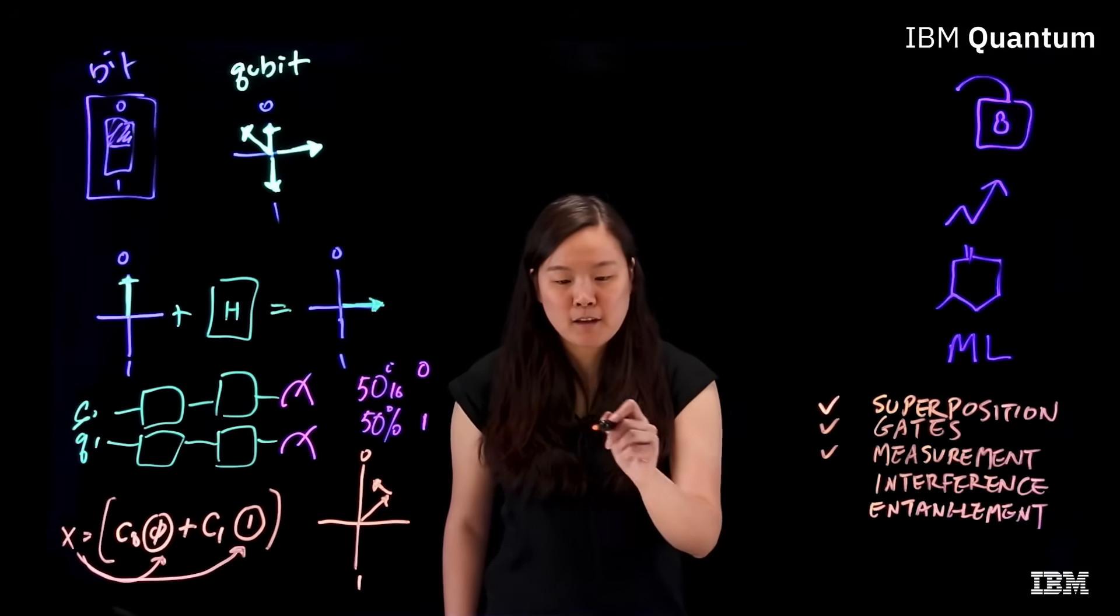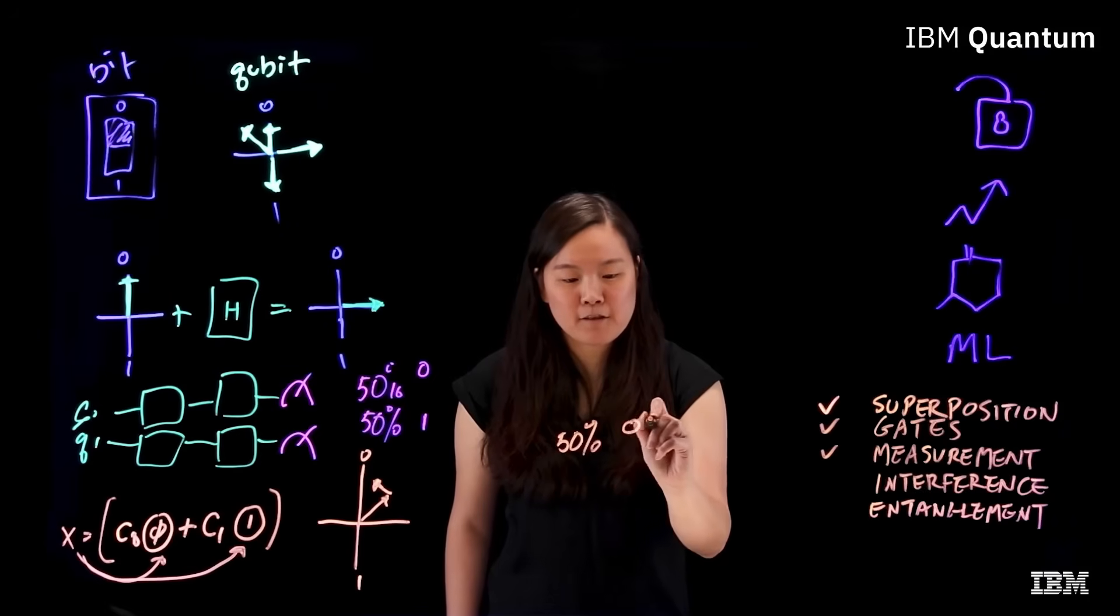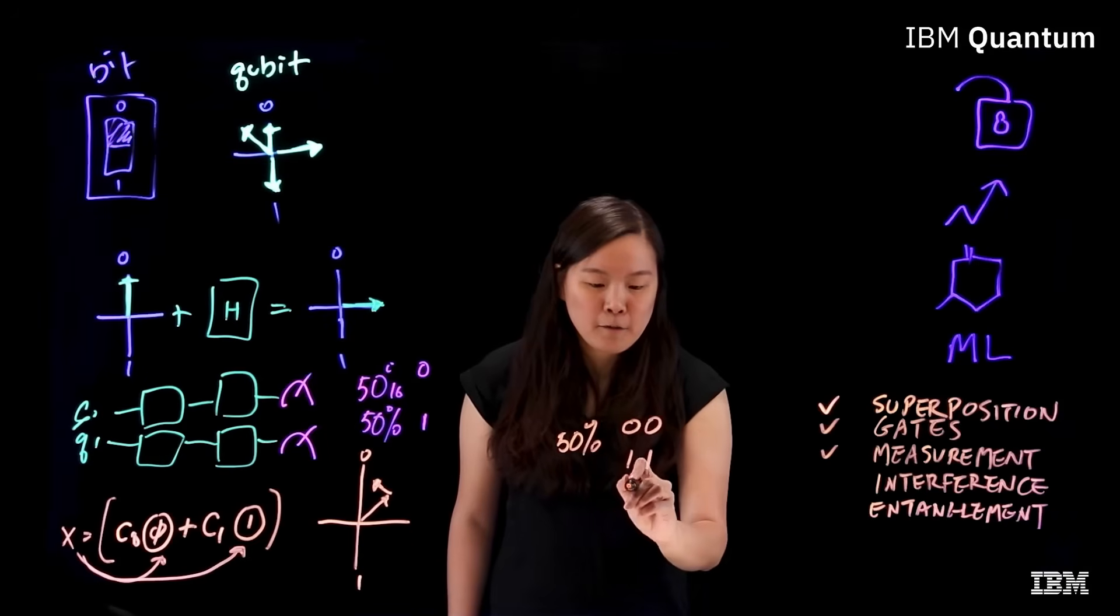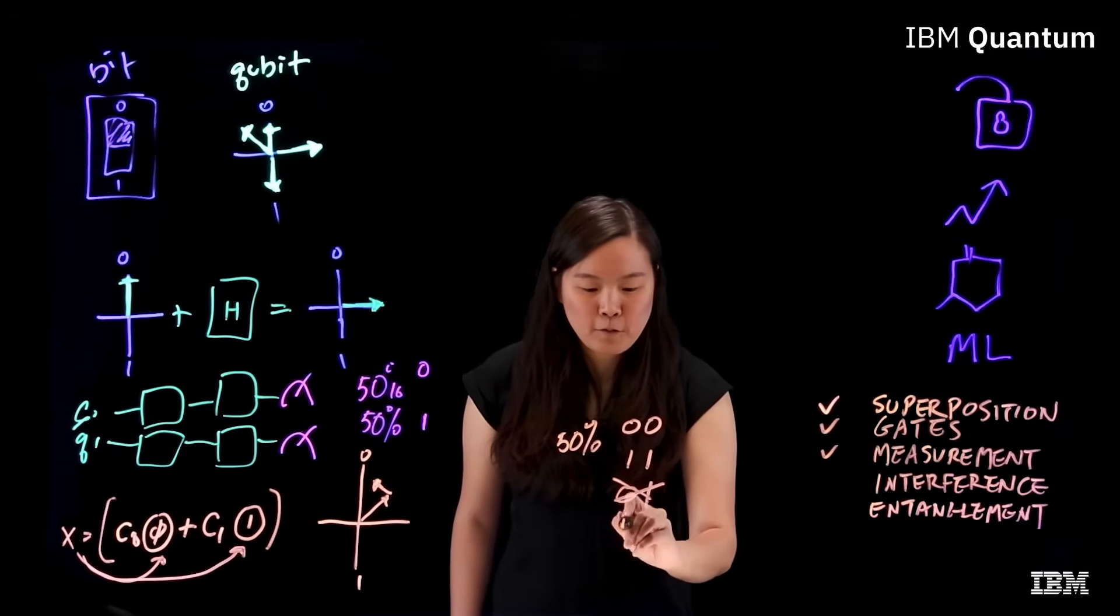For example, we can entangle two qubits so that their states have a 50% chance of measuring zero zero and 50% chance of measuring one one, but never a zero one or a one zero.